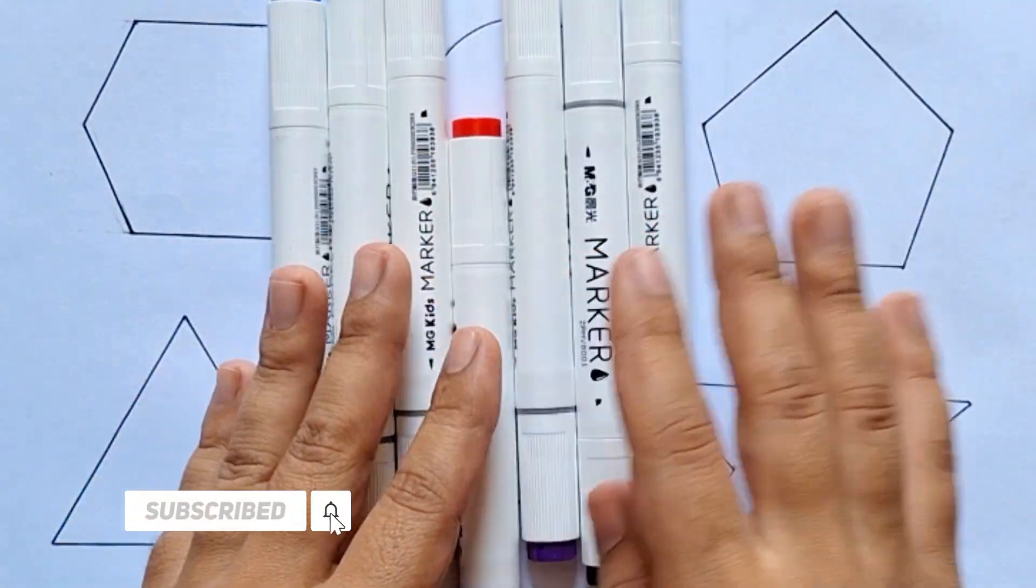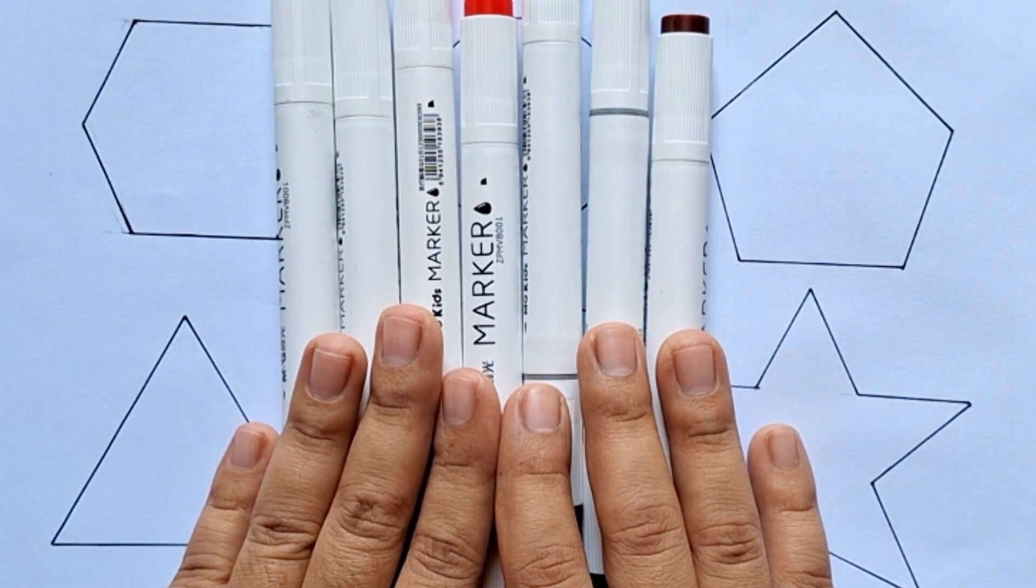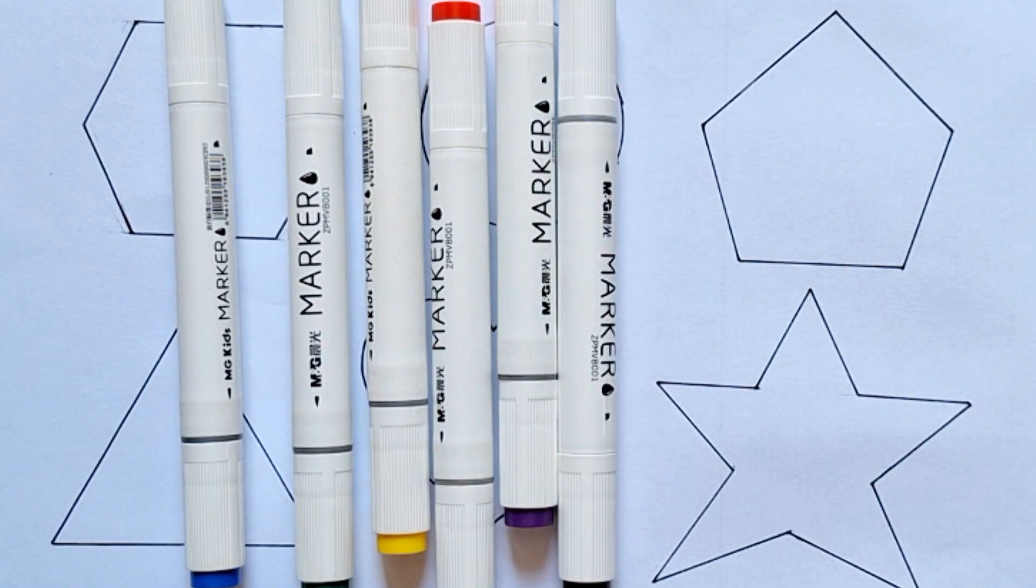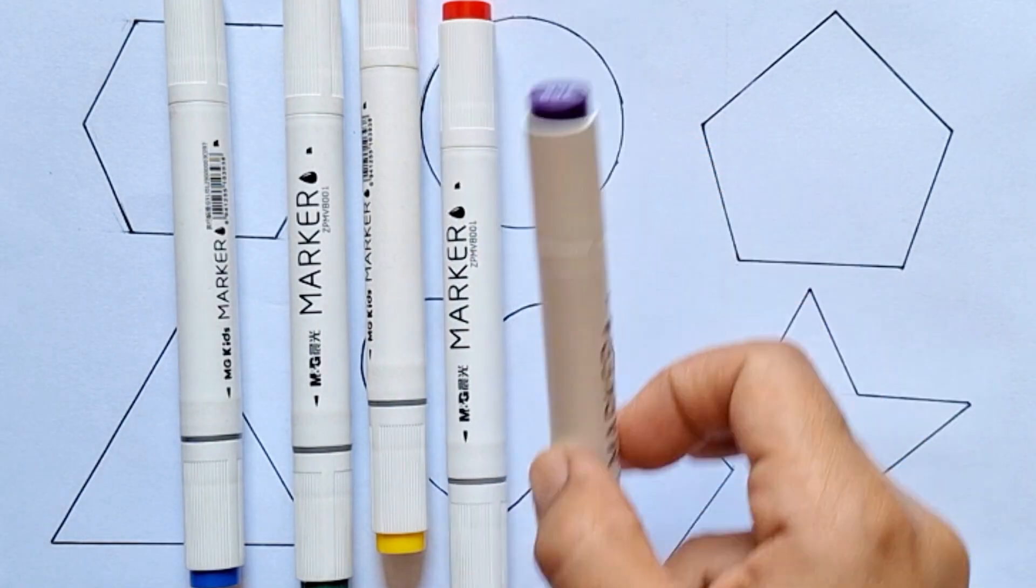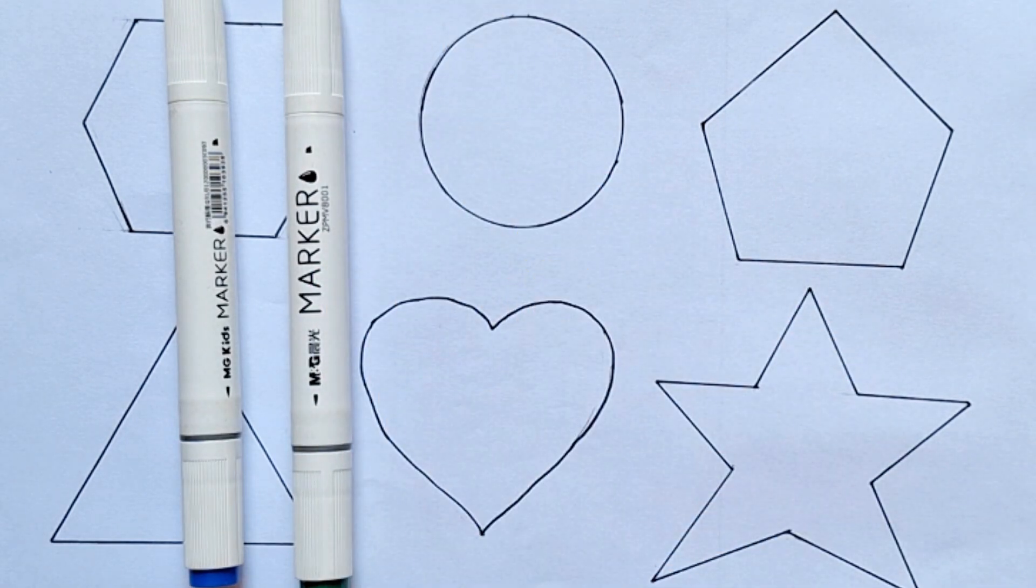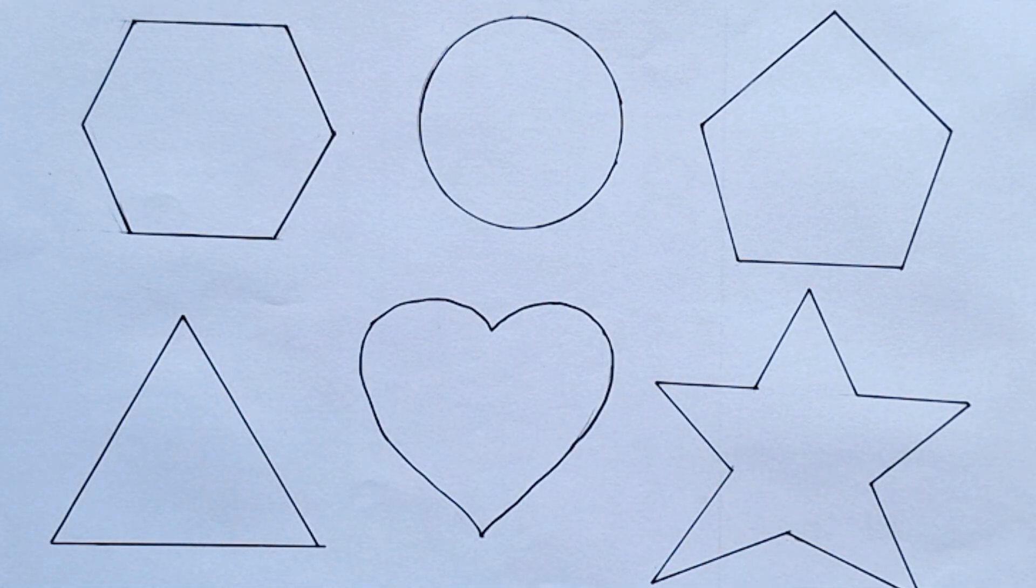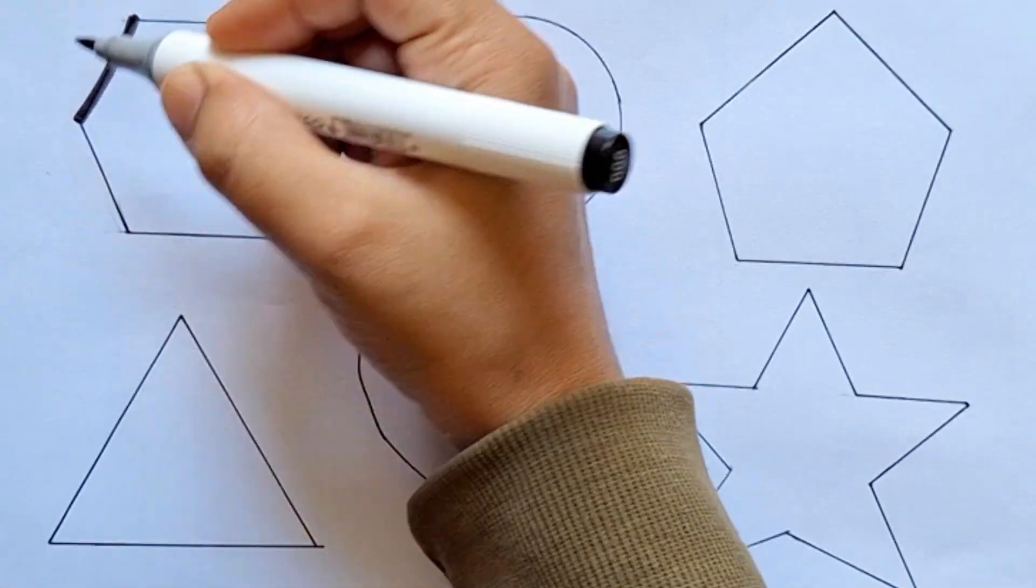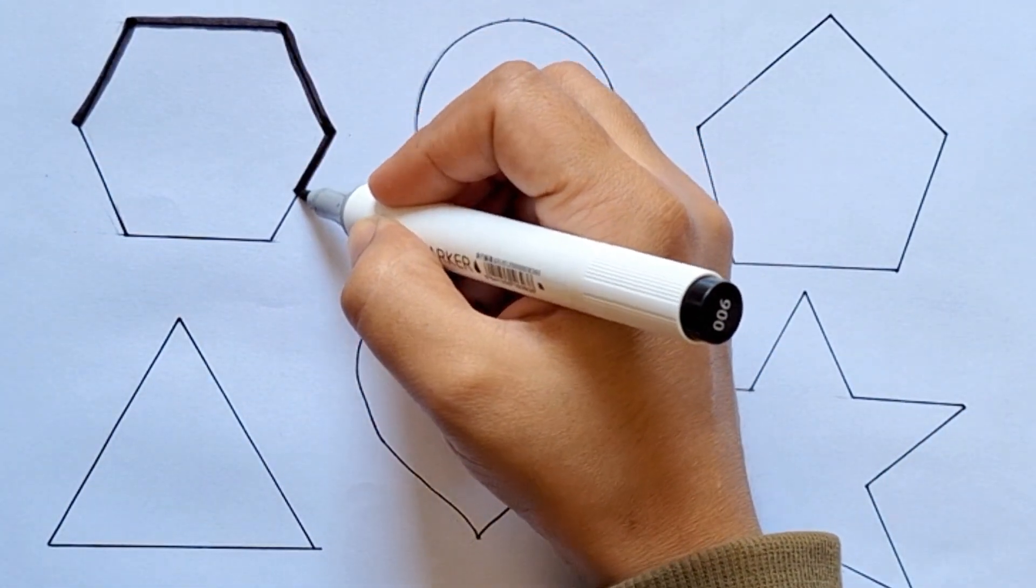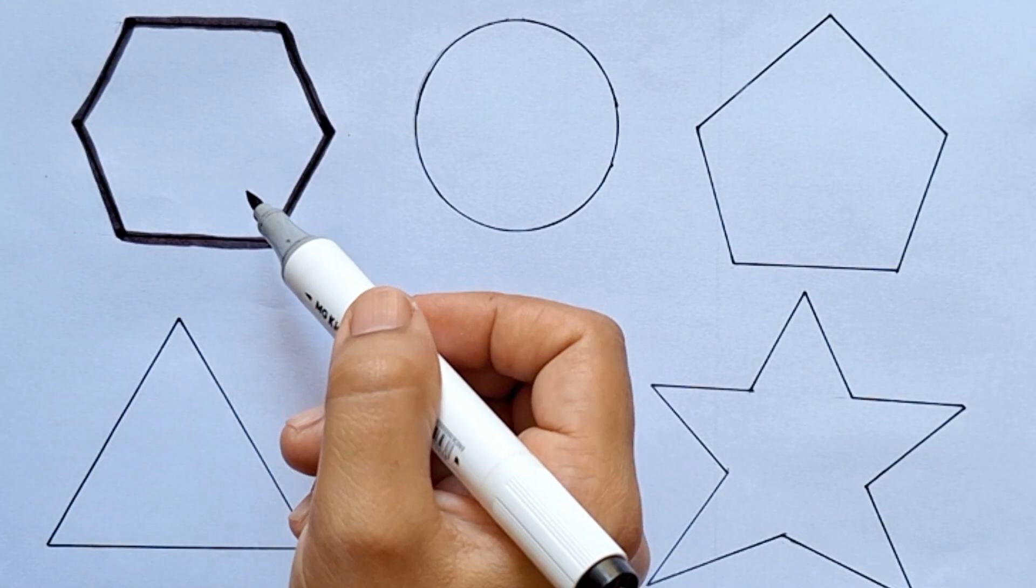Hello kids, how are you all? Today I'm going to teach you 2D shapes, but before, let's learn some colors. Brown color, black color, purple color, red color, yellow color, dark green color, dark blue color.